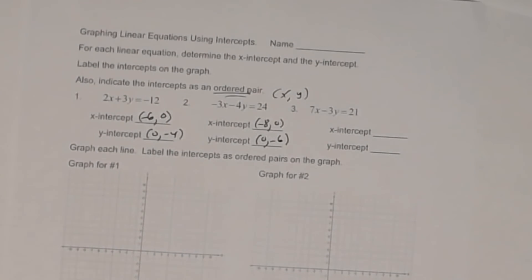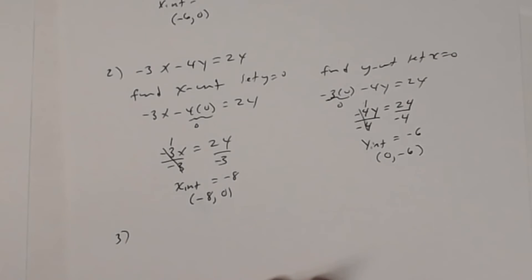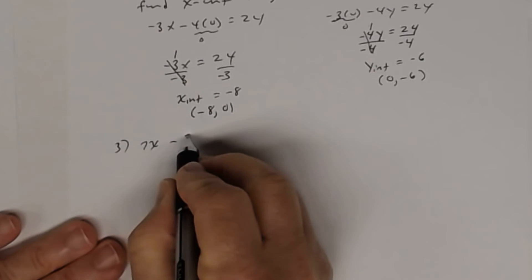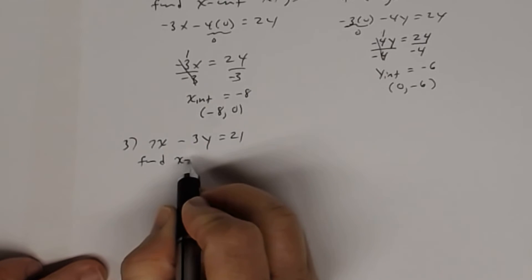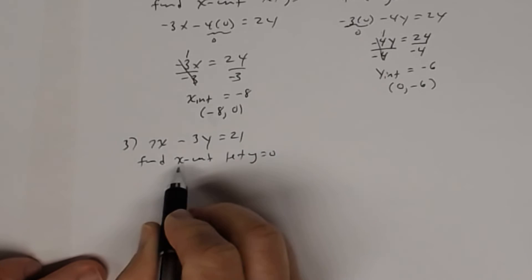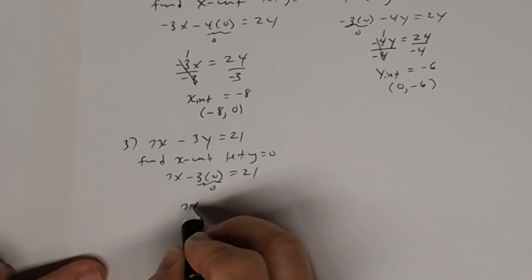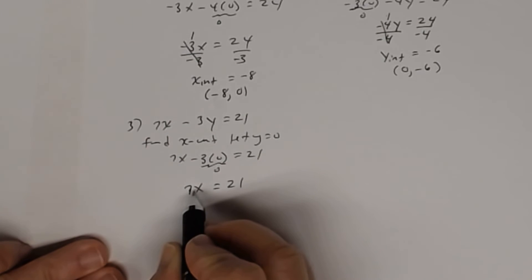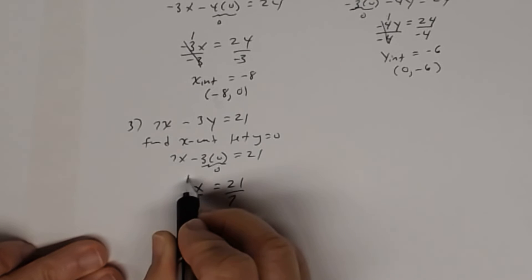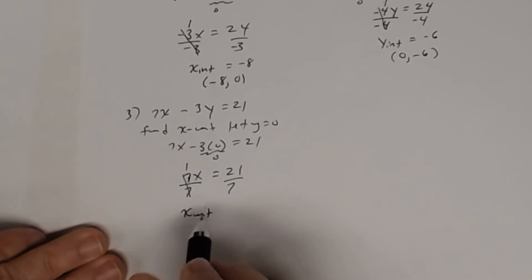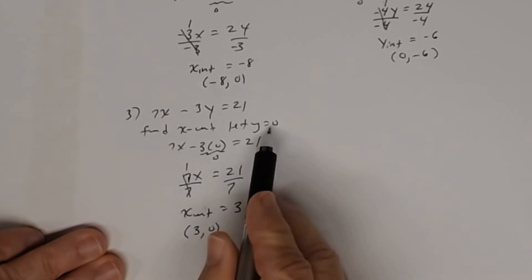Let's do number 3. We have the equation 7x minus 3y equal 21. To find the x-intercept, let y equal 0. I get 7x minus 3 times 0 equal 21. 3 times 0 is 0, so 7x equal 21. The coefficient of x is 7, so I divide both sides by 7. 7 divided by 7 is 1, and 21 divided by 7 is 3. As an ordered pair, the x-intercept is 3 comma 0, with y equal 0.